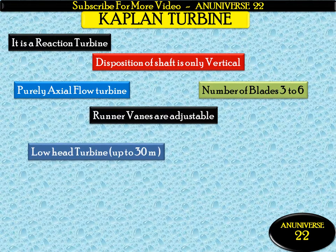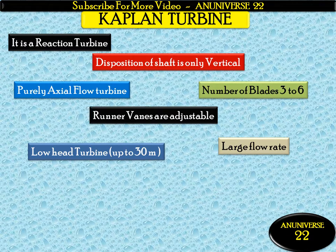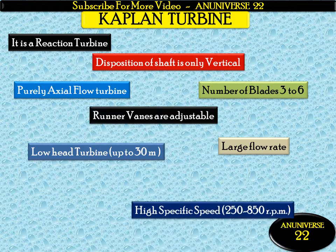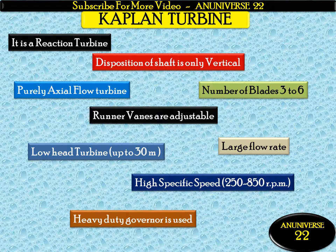It is a low head turbine, up to 30 meters, with a large flow rate, low head, and high discharge. It is a high specific speed turbine, and the speed varies from 250 to 850 RPM. A heavy duty governor is used for governing of this turbine.